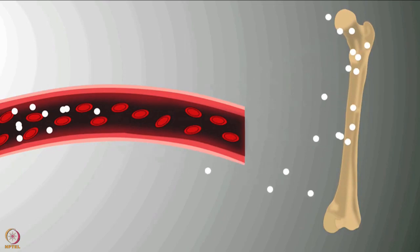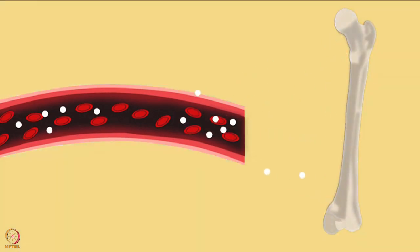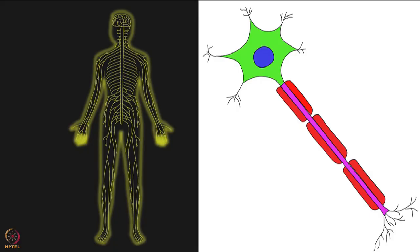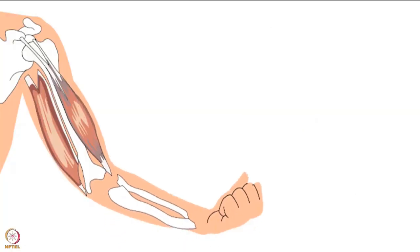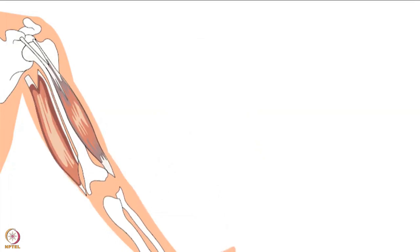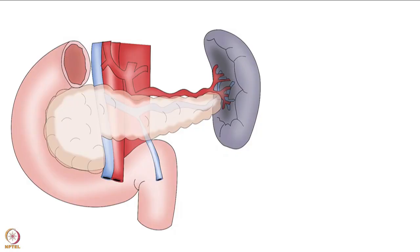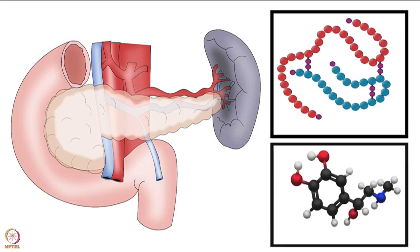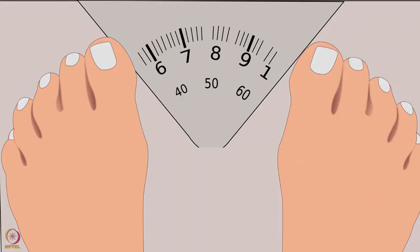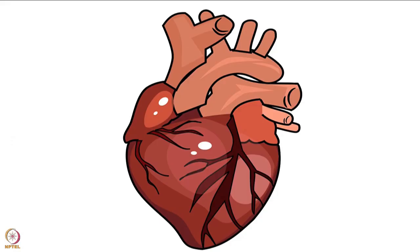If there is excess calcium in the body, it gets deposited in the bones; in case of deficiency, it can be taken from the bones. Calcium is essential for the transfer of nerve signals, helps in muscle contraction and movement, and helps stop blood flow after a cut. Calcium is needed for the secretion of hormones like insulin and adrenaline. Other benefits include maintaining body weight, blood pressure, and heart health.